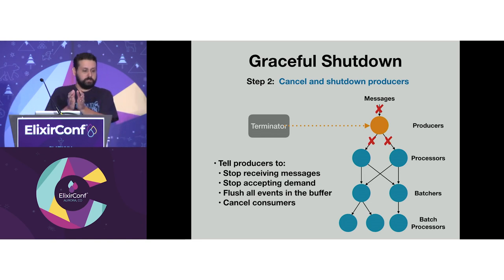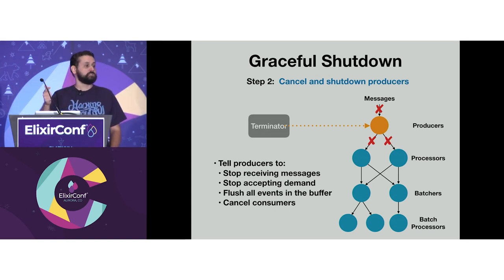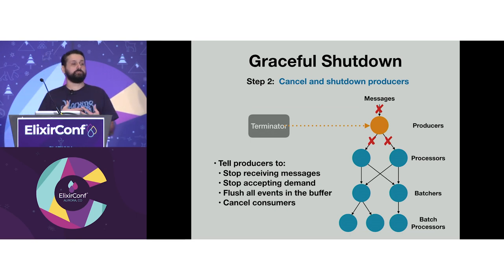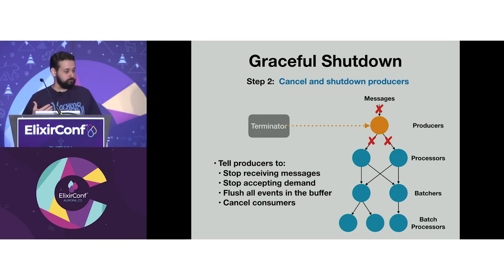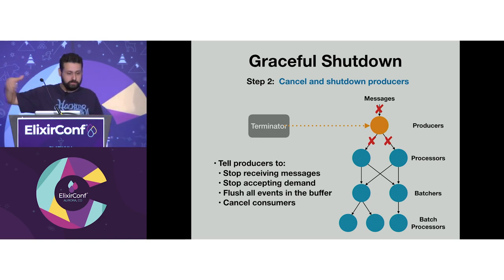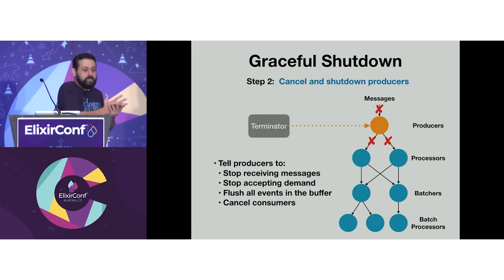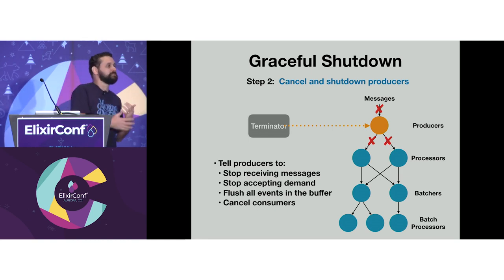The second step is to cancel and shut down the producers. We tell the producer to stop receiving messages via a callback called prepare_for_draining, which tells the producer not to fetch any more messages. Then we tell it to stop accepting demand — since we're shutting down, there's no need for more demand; we just accumulate and ignore new demand and only process messages already in hand. Then we flush the events in the buffer, and finally cancel the consumers.